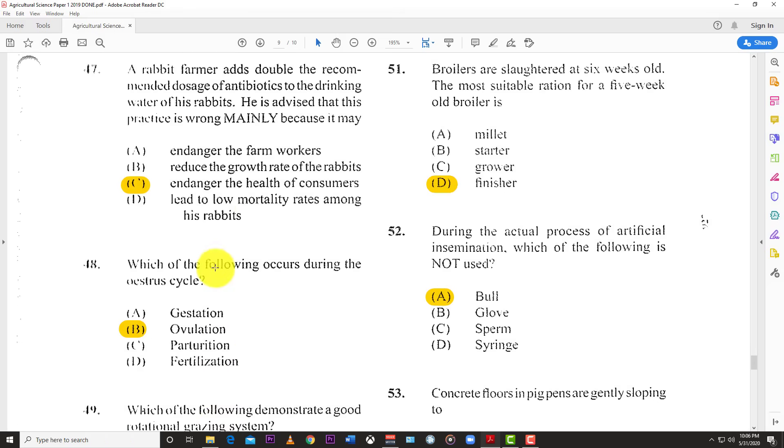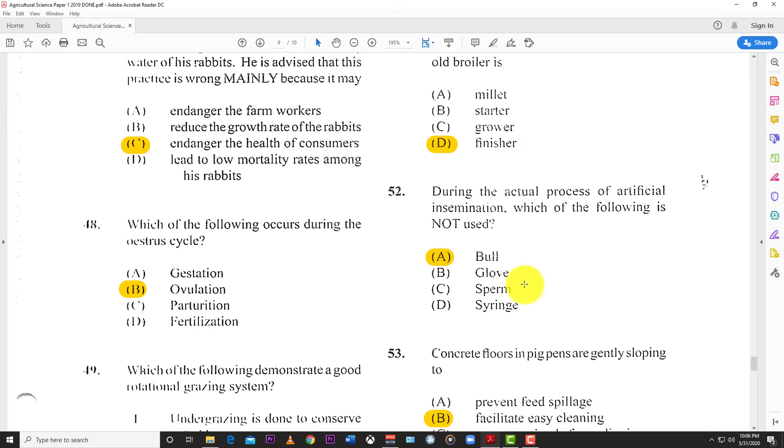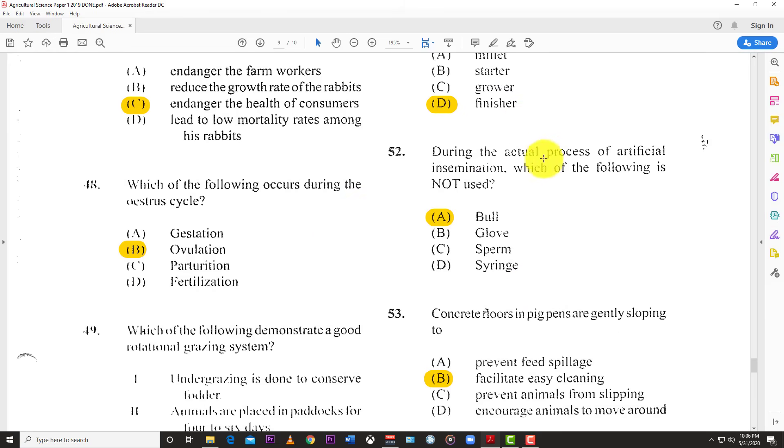Number 51: Broilers are slaughtered at six weeks old. The most suitable ration for a five-week-old broiler is the finisher. You want them to get nice and healthy and fat, so you want to finish them out, getting them marbled, nice and lean. Number 52: During artificial insemination, which of the following is not used? A bull. You don't use the bull - you get the sperm from the bull somewhere else. During AI you have the gloves, the sperm from the bull, and the syringe to implant the sperm into the female.